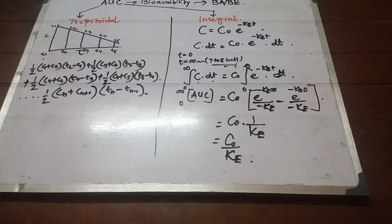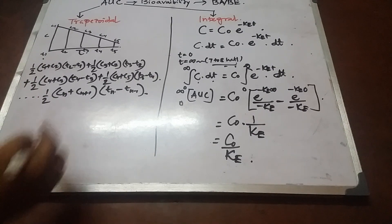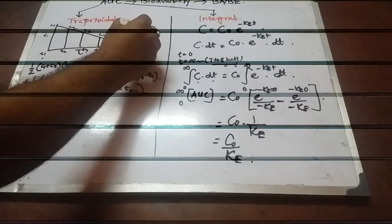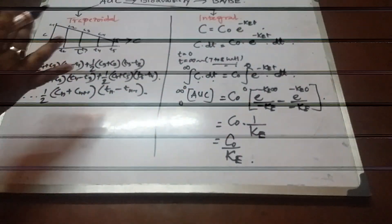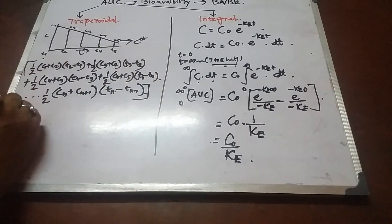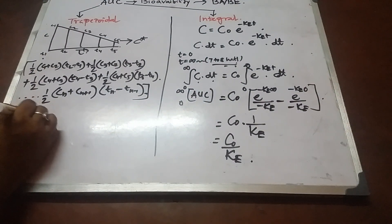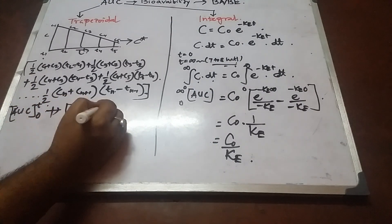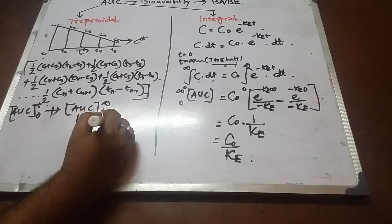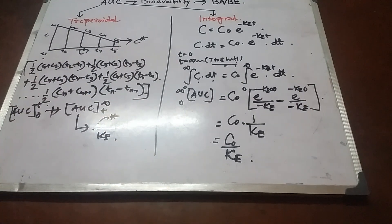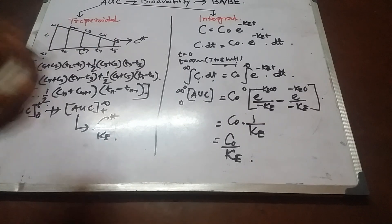So the AUC from zero to infinity equals C₀ divided by ke. Now, if we cannot calculate beyond, say, C5 in the trapezoidal method, we consider C5 as our last concentration — called C*. The AUC from zero to that time t is determined by the trapezoidal method, and the remaining AUC from t to infinity is determined by the formula C* divided by ke. By this way, even in the trapezoidal method we can calculate the total area under the curve.